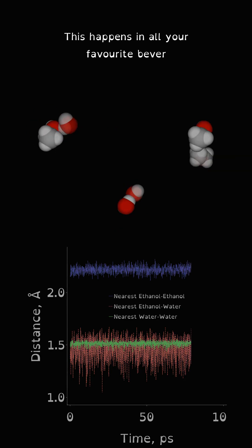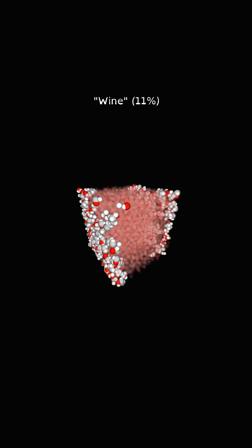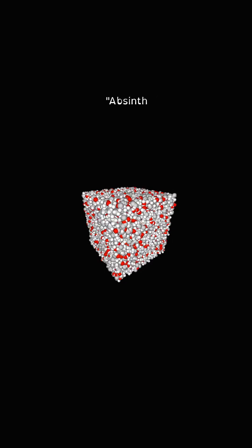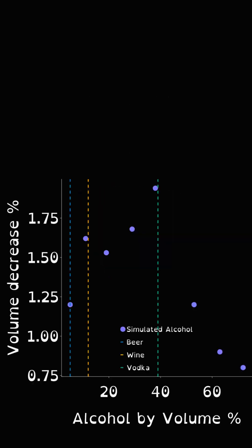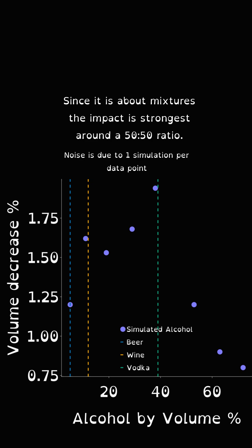This happens in all your favorite beverages like beer, wine, port, vodka, absinthe and Everclear, but at varying degrees. Since it is about mixtures, the impact is strongest around a 50-50 ratio and weakest at high and lower alcohol concentrations.